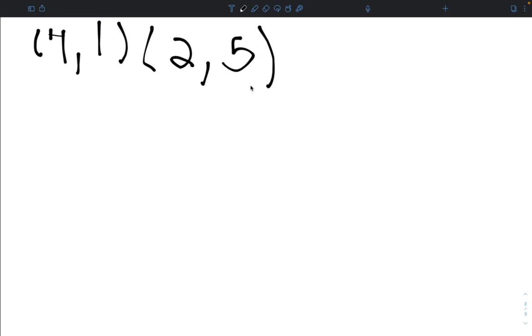So, using our equation, we're going to subtract y2 minus y1. So our first y is 5. So 5 minus 1. And then 2, which is our x1, minus 4, which is our x2.